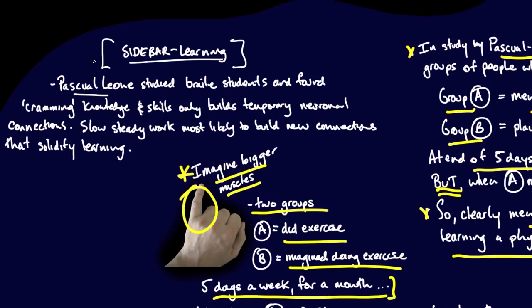A quick sidebar on Pasquale-Leon, who studied Braille students and found that cramming for knowledge and skills only builds temporary neural connections. Slow, steady work is most likely to build new connections that solidify learning.